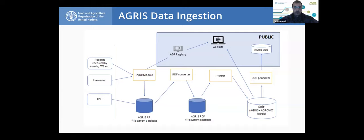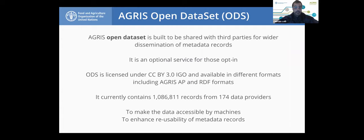I want to briefly mention another service: the Open Dataset. This is a service for the entire community, not only for AGRIS data providers. The idea is to make available a subset of the AGRIS database under the CC BY 3.0 IGO license so that other people can reuse records. We cannot open the entire AGRIS database, so to participate, a data provider must opt in and authorize us to publish their records under this license. Currently, the Open Dataset contains records from 174 data providers with more than 1 million records, and we think this number can increase a lot in the future.